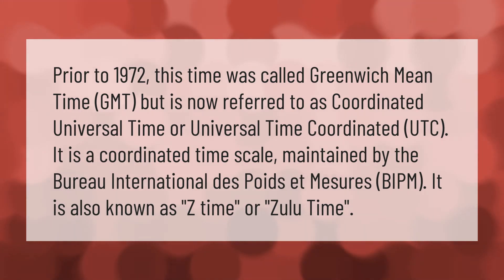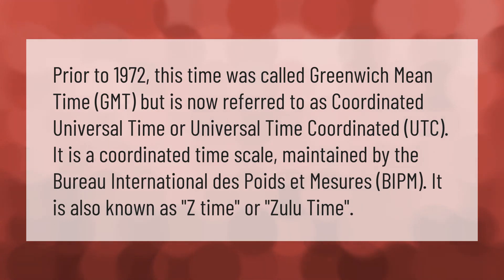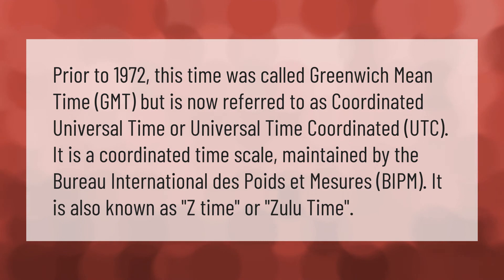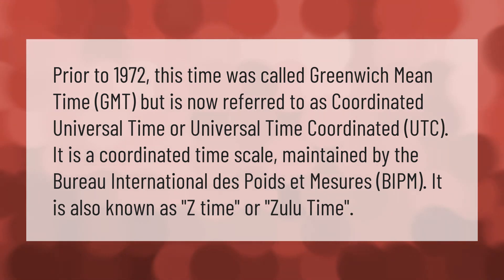Prior to 1972, this time was called Greenwich Mean Time (GMT), but is now referred to as Coordinated Universal Time, or Universal Time Coordinated (UTC). It is a coordinated time scale maintained by the Bureau International des Poids et Mesures (BIPM). It is also known as Z time or Zulu time.